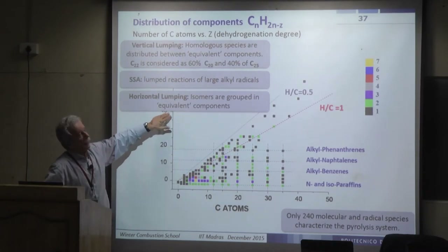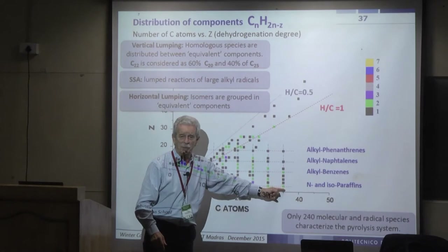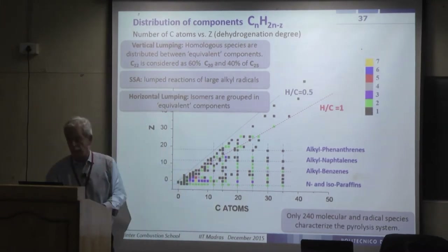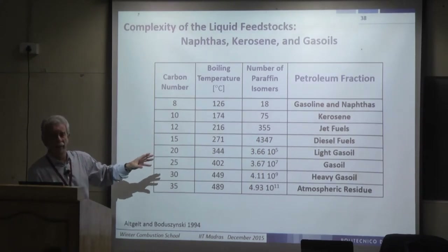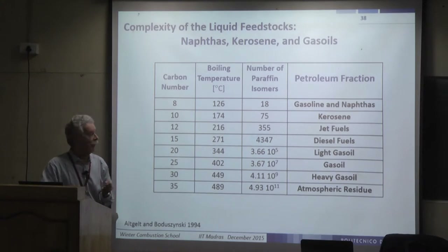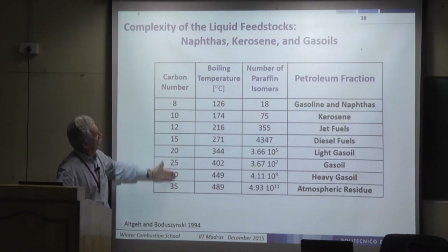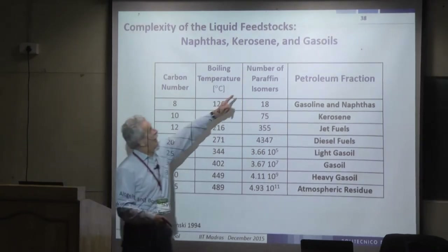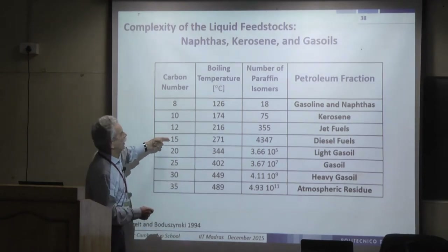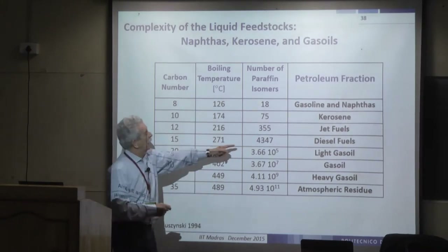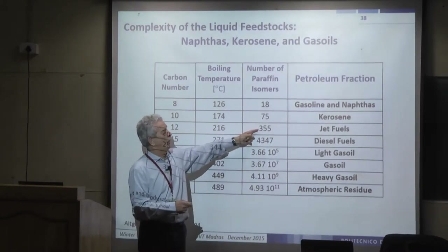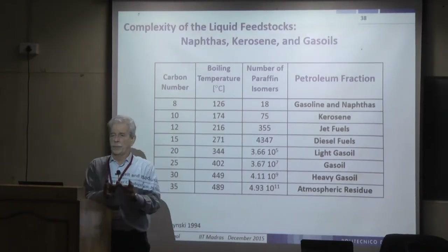While high temperature mechanism is not sensitive to fuel structure, low temperature mechanism is structure-sensitive. We have seen the explosion diagram of methane showing both high and low temperature mechanisms. At low temperature, alkyl radicals form peroxy radicals that undergo isomerization and further reactions explaining low temperature reactivity. Automatically generating low temperature reactions for all species requires defining new kinetic parameters for new reaction classes.